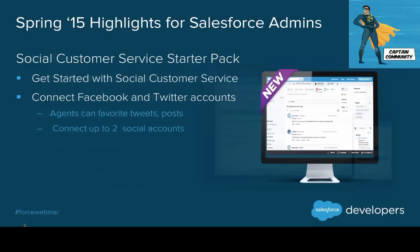For the service side of the house, the Social Customer Service Getting Started Pack is very exciting. You can connect up to two accounts — Facebook and Twitter, two Facebook accounts, or two Twitter accounts — and your agents can favorite tweets and posts. You're starting to get that 360-degree view of the customer. It uses Radian 6 technology but does not require a Radian 6 contract, so upgrading later is super easy.